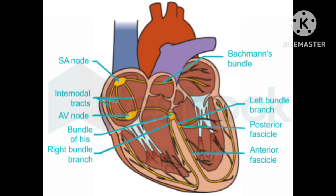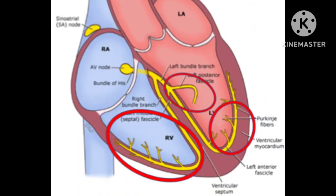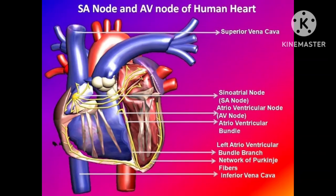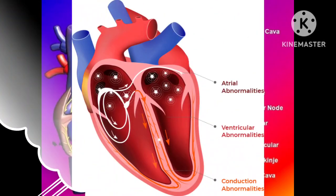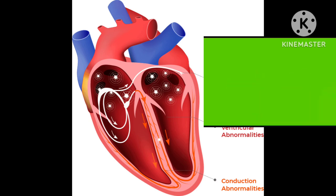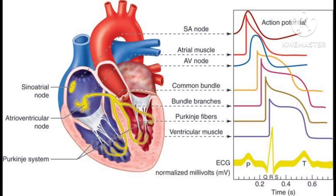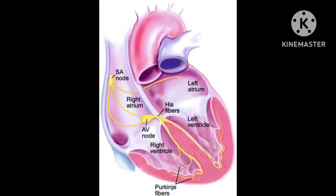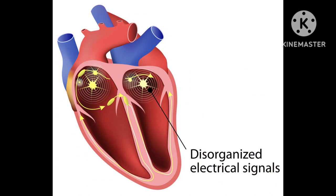Medicines can be used to speed up a heart that's beating too slow, or slow down a heart that's beating too fast. They can also be used to convert an abnormal heart rhythm to a normal rhythm — medicines that do this are called antiarrhythmics. Some medicines used to slow a fast heart rate include beta blockers and calcium channel blockers, often used for people with atrial fibrillation.